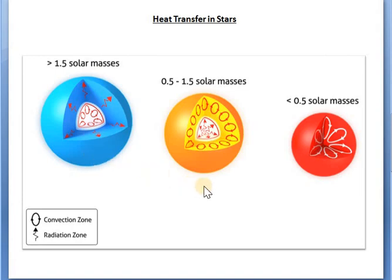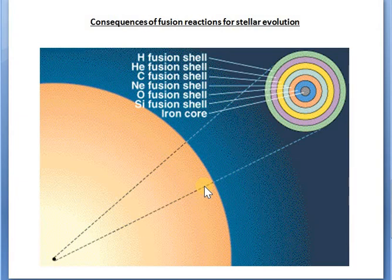Now let me talk about the second important topic connected to our nuclear astrophysics lectures: the various consequences of fusion reactions for stellar evolution. You can see the onion-shaped structure shown here in the star — this is one of those consequences, and we have discussed this in class as well.